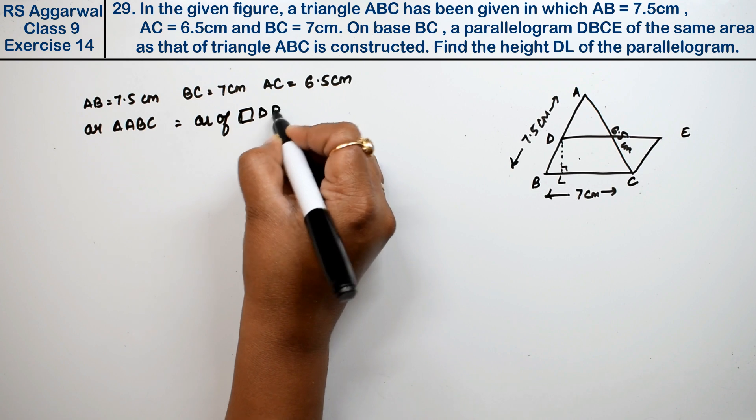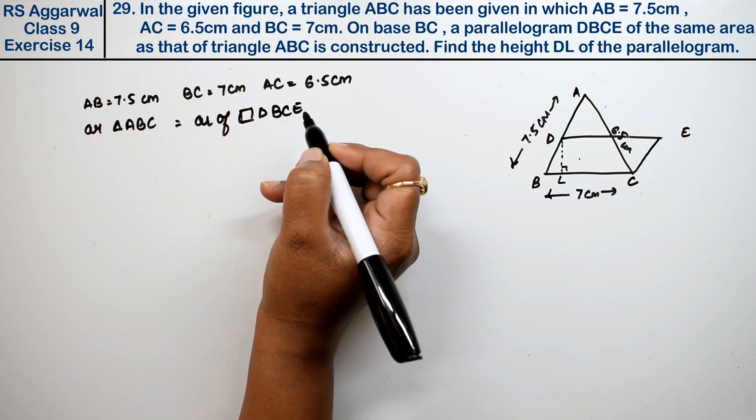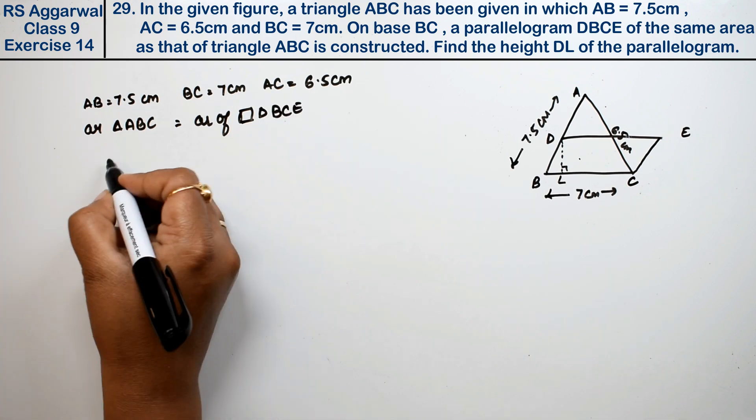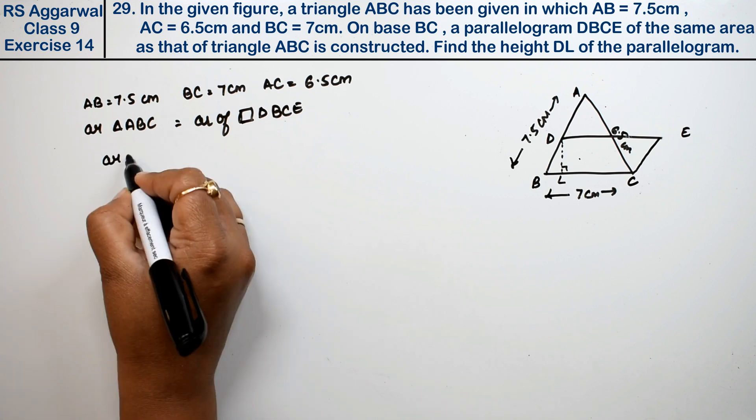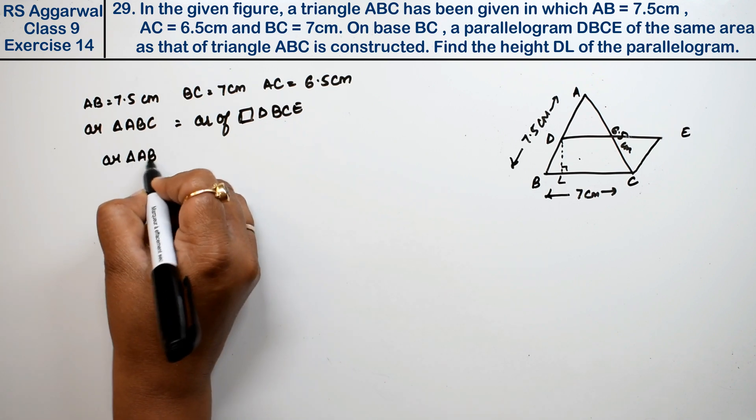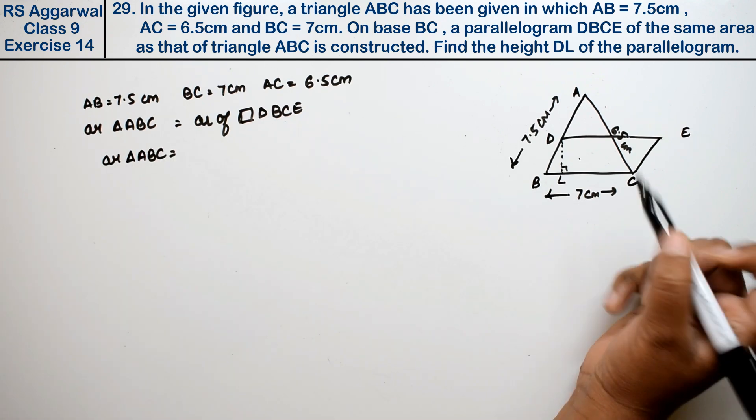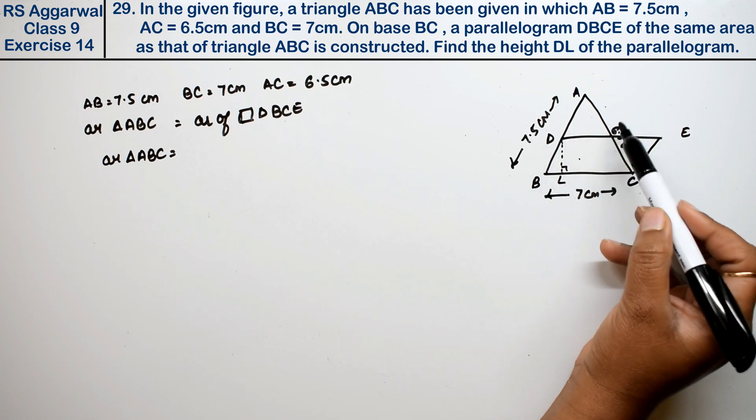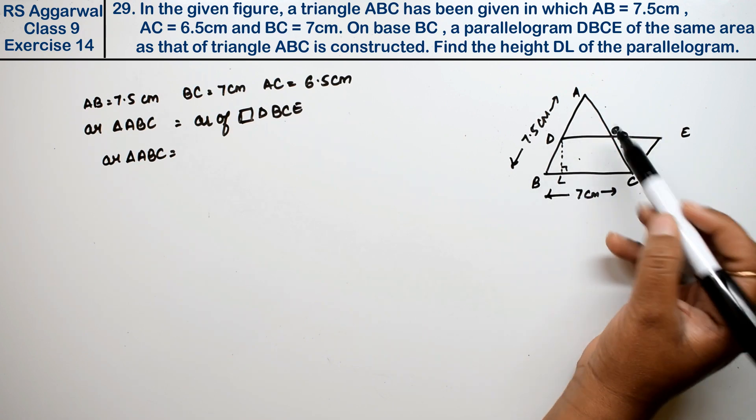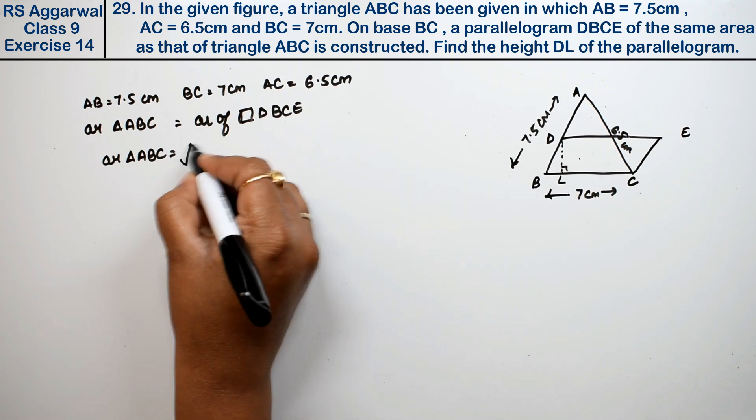We have to find the area of triangle ABC. Which formula? This is a scalene triangle with three different sides, so we use Heron's formula.